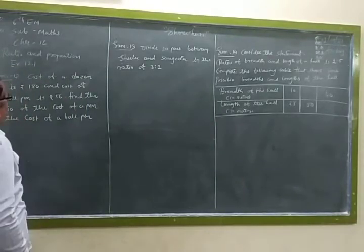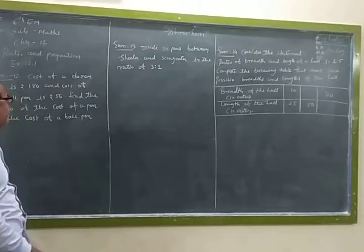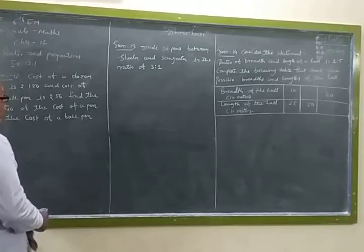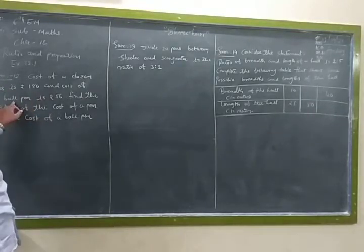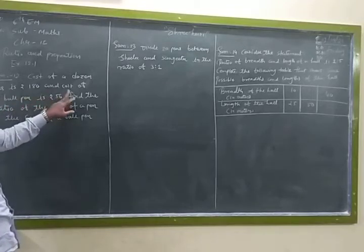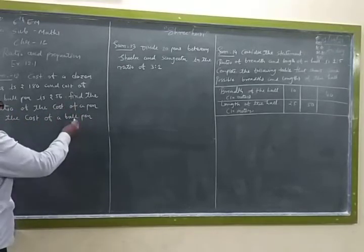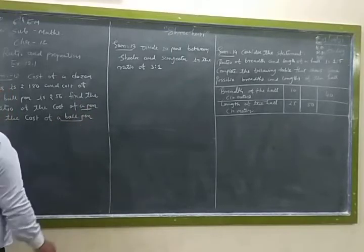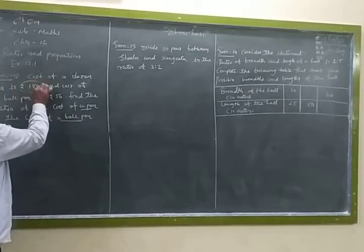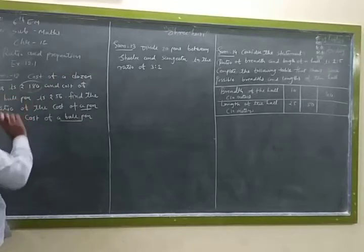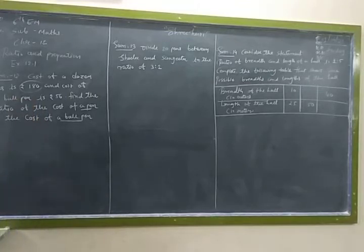Sum number 12: Cost of a dozen pens is Rs. 180 and cost of 8 gold pens is Rs. 56. Find the ratio of the cost of a pen to the cost of a gold pen. A pen and a gold pen means only one pen and one gold pen, but we have given the price in the dozen and eight gold pens. So first, we have to find the price of one pen and one gold pen.